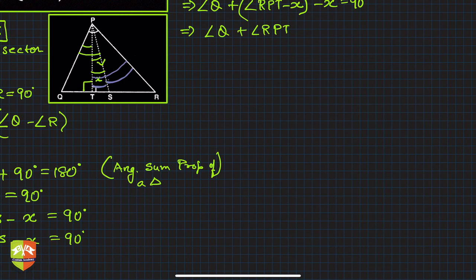What is ∠RPT? If you see, ∠RPT is nothing but—let me write it in a separate note so that it becomes easier. So let us—this is one. Now in triangle, triangle PTR, it's another right angle triangle.